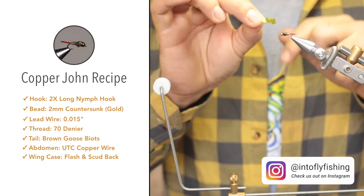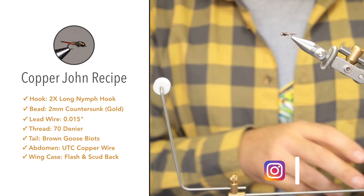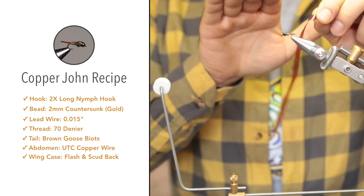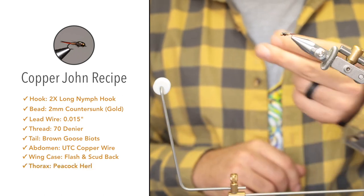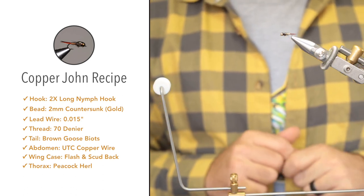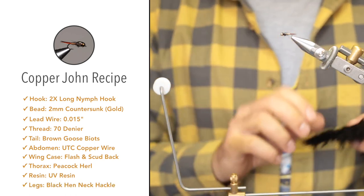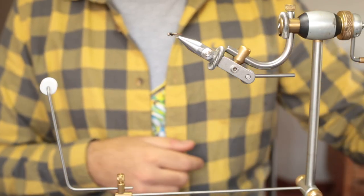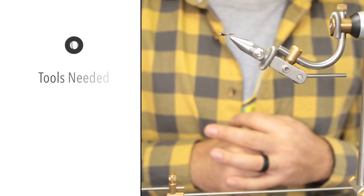Under that flash material, we have scud back material, which is flexible so you're able to pull it over the thorax quite tightly. For the thorax itself, we'll be using peacock herl, just two fibers. To seal it all off, we'll be using Solarez UV resin. To add legs to the fly, I have some black hen neck hackle. You can use partridge, pheasant, or even mallard.